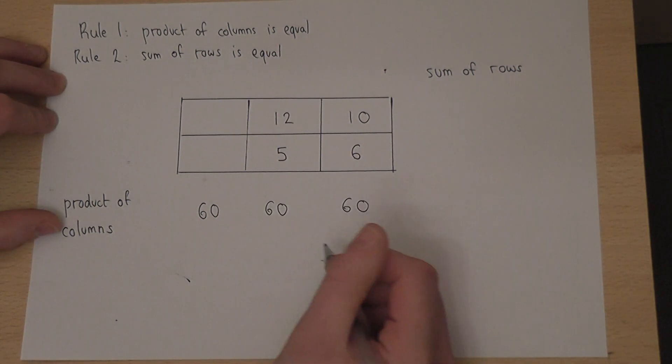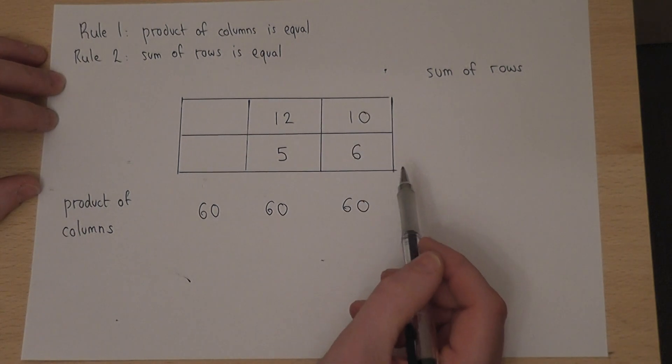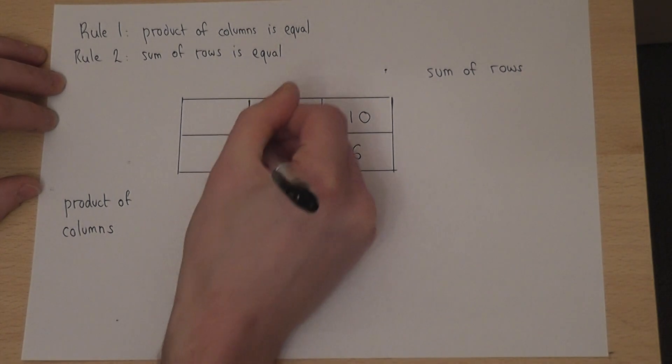The factors of 60 are 12, 5, 10 and 6. The other options could be 10 and 6.